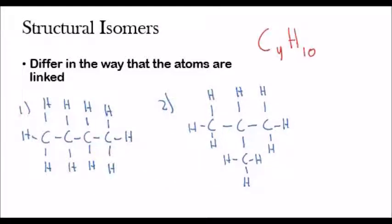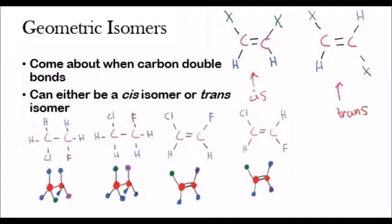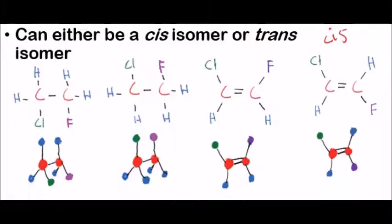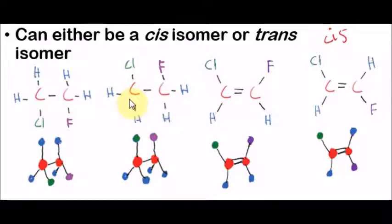Geometric isomers come about when carbon double bonds, and this can either form a cis isomer or a trans isomer. Let me go ahead and zoom in so you can understand what this means. So I've zoomed in here so you can better understand this. If you look here, in this compound here and this one, these two molecules are actually the same thing.